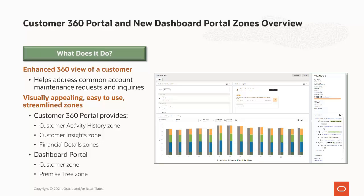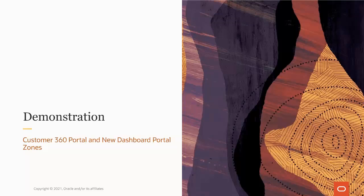The Customer 360 Portal contains three main zones: the Customer Activity History Zone, the Customer Insight Zone, and a Financial Detail Zone which consists of usage and billing, financial history, and payment agreement information. The Dashboard Portal consists of a new Customer Zone which displays all the key data points about a customer, and a new Premise Tree Zone which combines the existing premise and account trees in Control Central. Now let's take a look at these new features so you can see how the Customer 360 Portal and new dashboard portal zones can be used by your business.